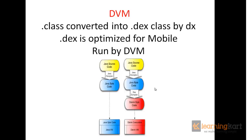This has been optimized for resources. For instance, if there is the same string variable defined in different classes, the DEX tool references a single string resource for all the classes. Similar such optimizations are done by the DEX tool to make it more memory efficient, since it has to be run on a mobile device.